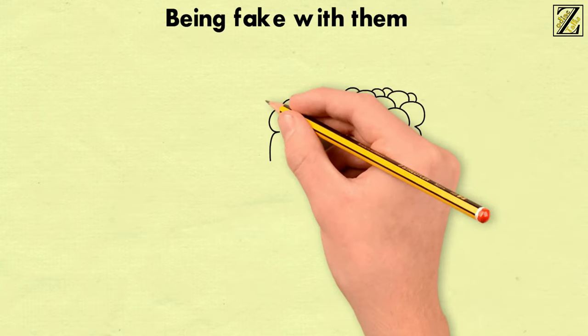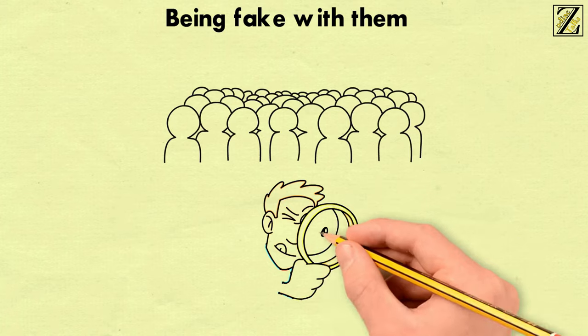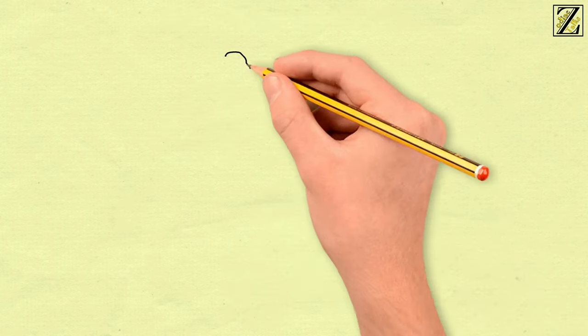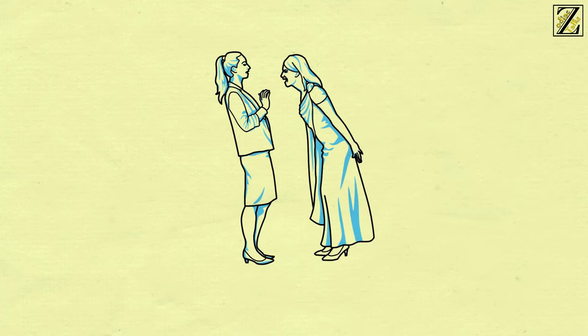Being fake with them. Fake people do toggle the anger of a Scorpio. Their investigative spirit can easily catch someone trying to pretend to be something else that they're not, so there's no escape for double-faced people.